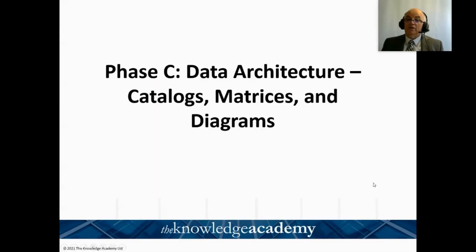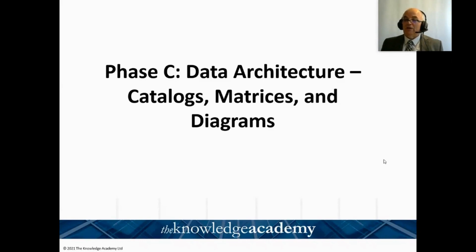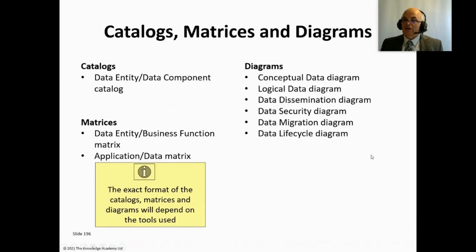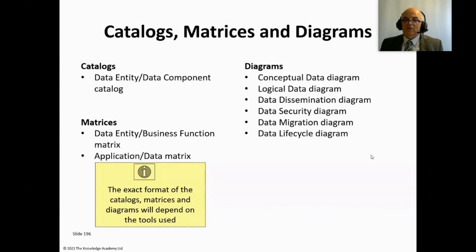Now we're going to look at some example artifacts that you might create when developing the data architecture in Phase C. Remember that you don't need to know any detail about these artifacts — this is just background information giving you an idea of what some of these might look like. The main thing to remember is where to find the information in the TOGAF standard: page 328 for the list of artifacts, and pages 329 to 348 for the descriptions.